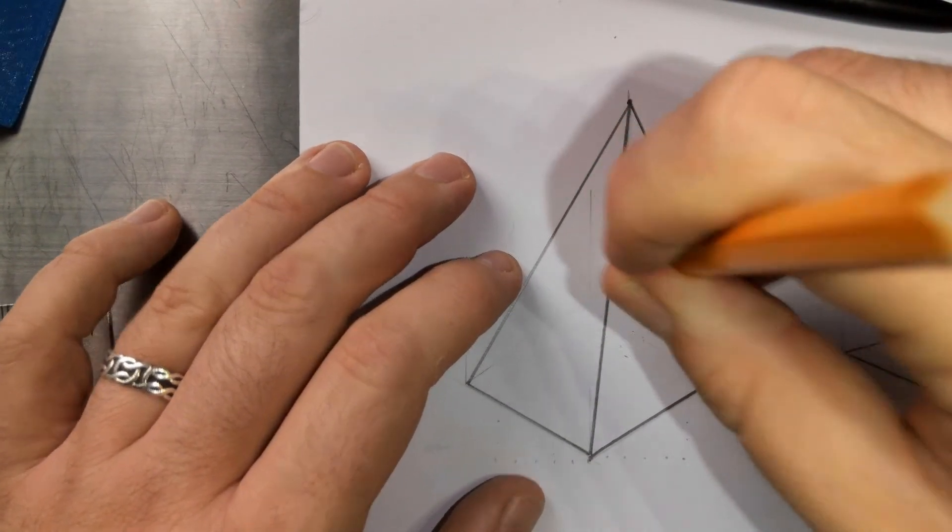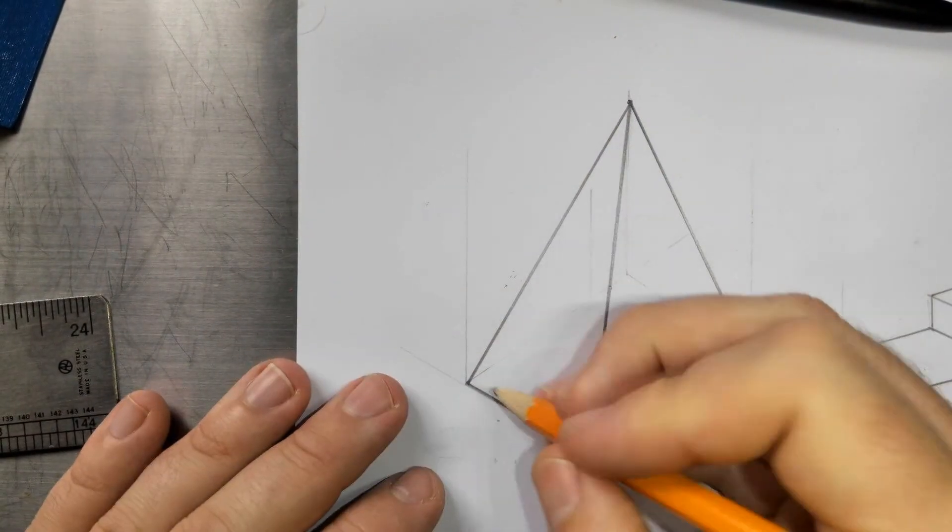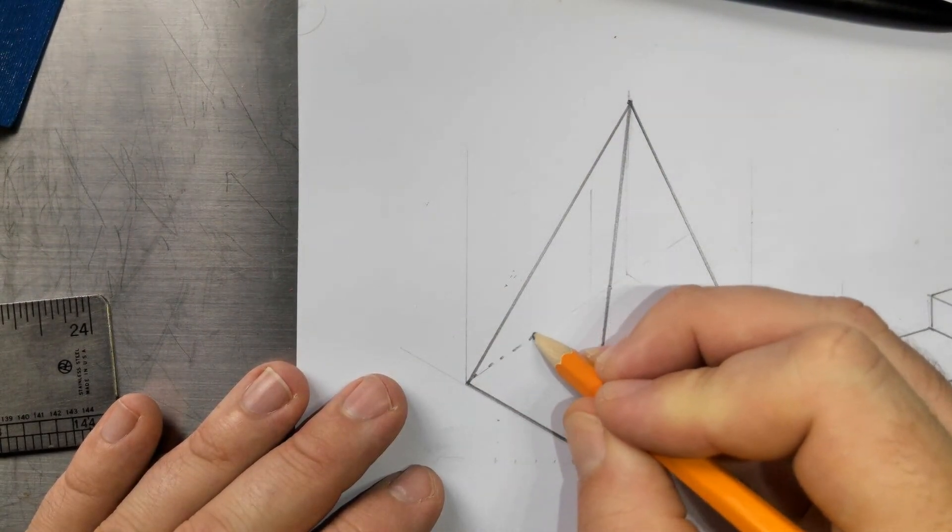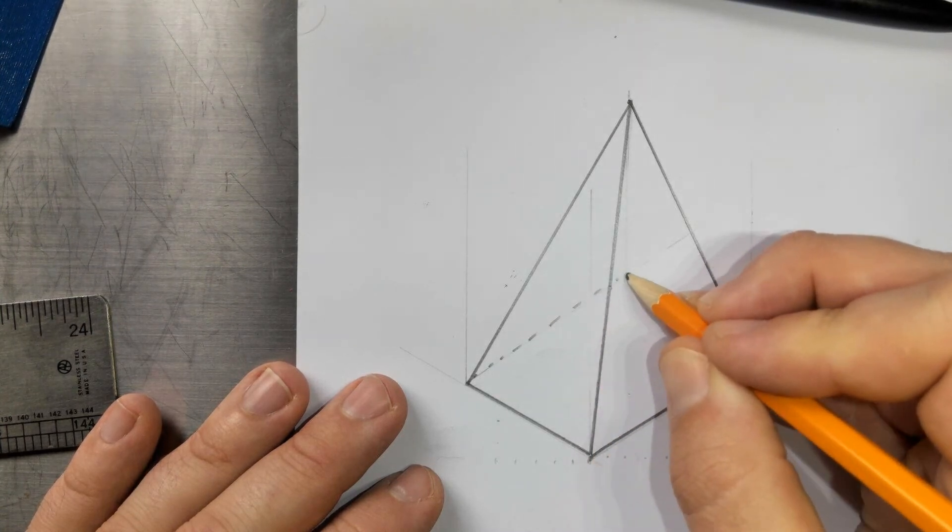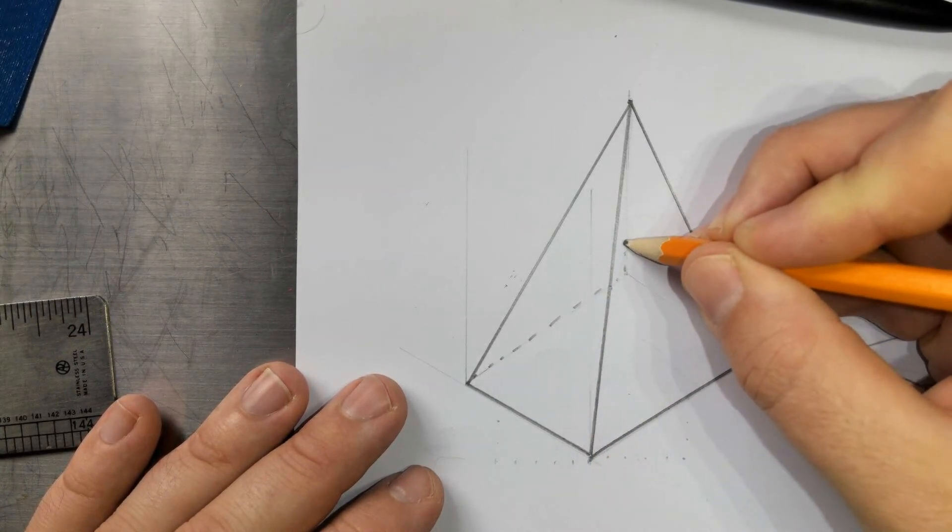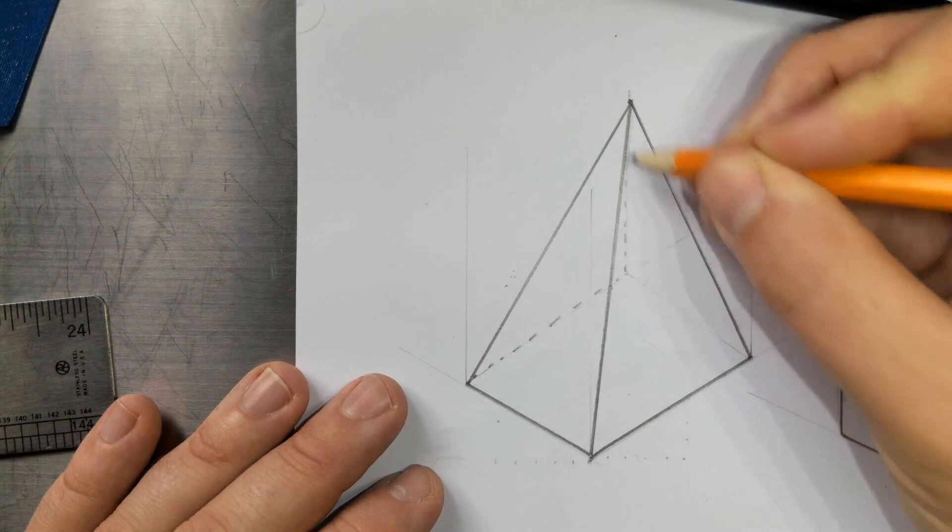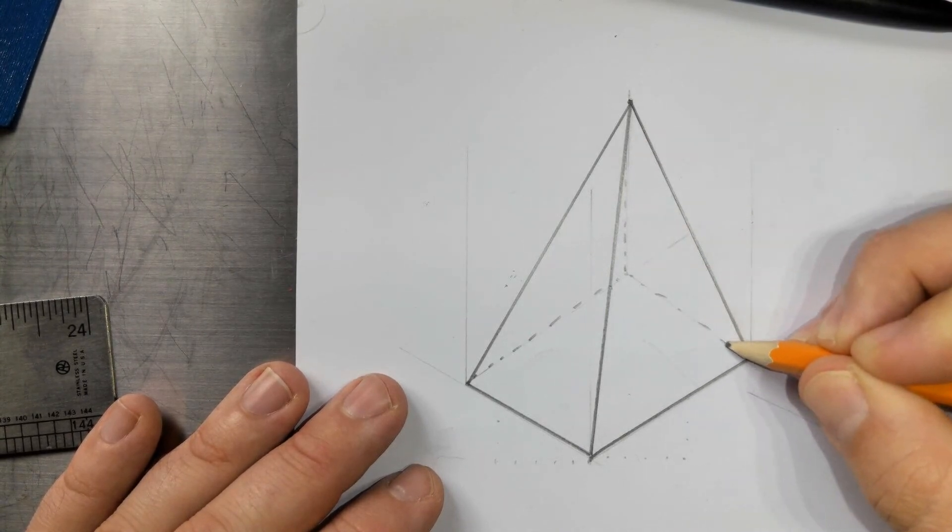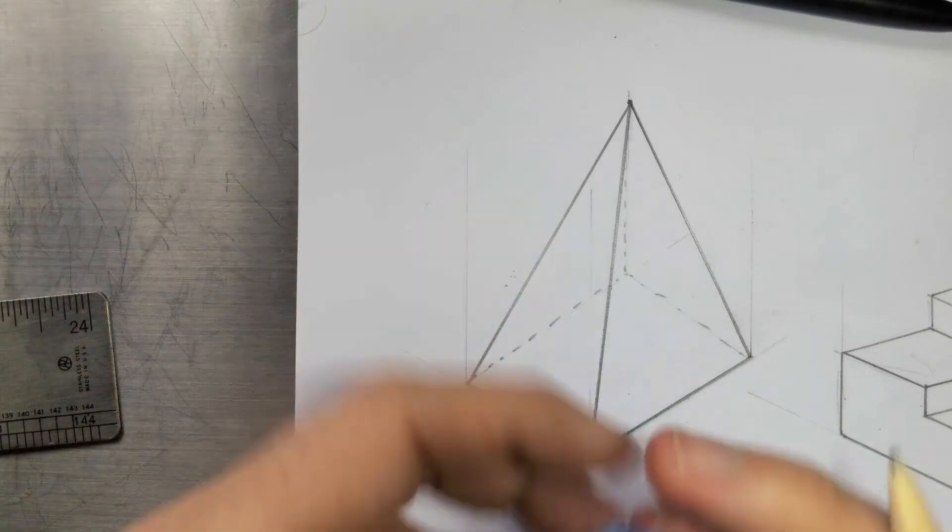Now if you wanted to show hidden lines here you could by doing dashes to show that we go back to this back corner here because sometimes when you have a really simple object it can be difficult to know what's going on with just that object.